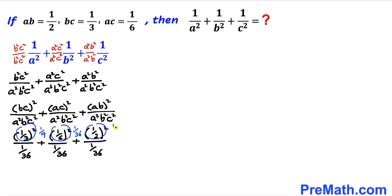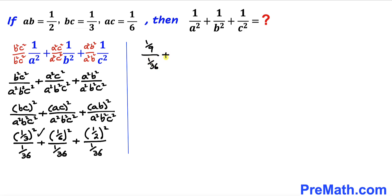So the first fraction becomes (1/9) over (1/36), plus the second term is (1/36) over (1/36), plus the third term is (1/4) over (1/36).